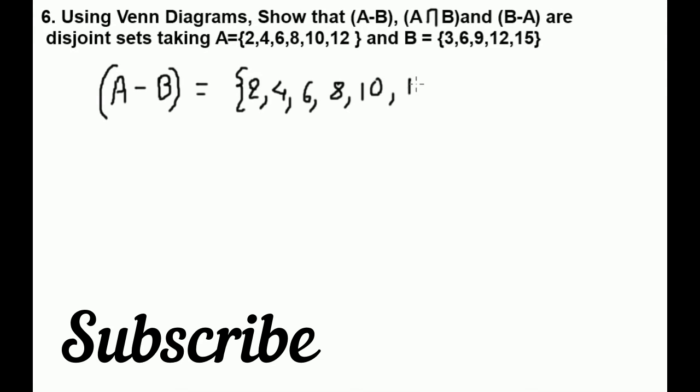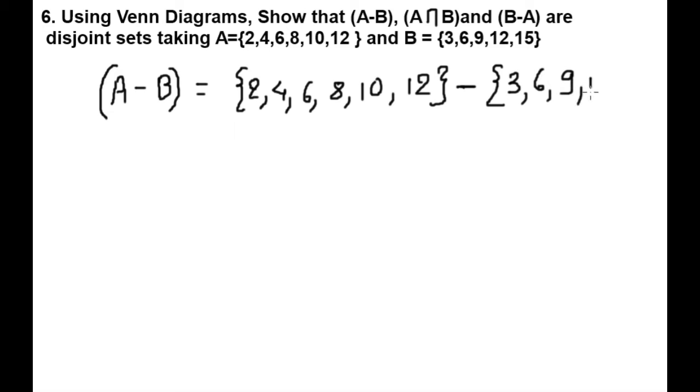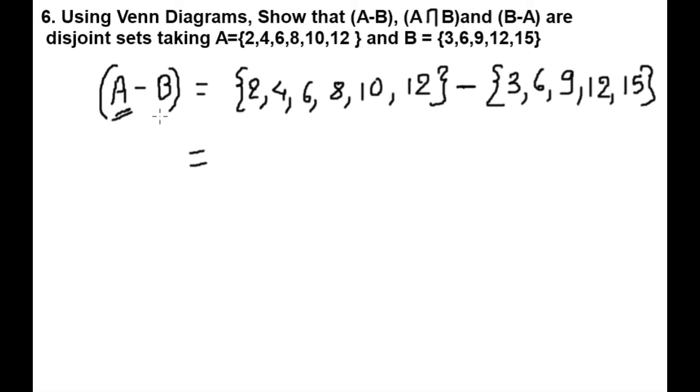Let's start with A-B. A-B means set A minus set B, so we have to write elements which are only available in set A, not in set B. Let's see what the elements are. 2 is only in set A, not in set B. 4 is only in set A, not in set B. 6 is in both.